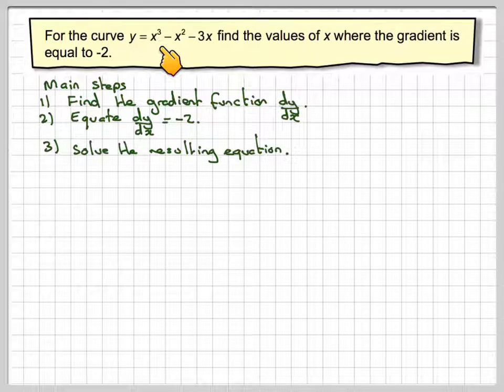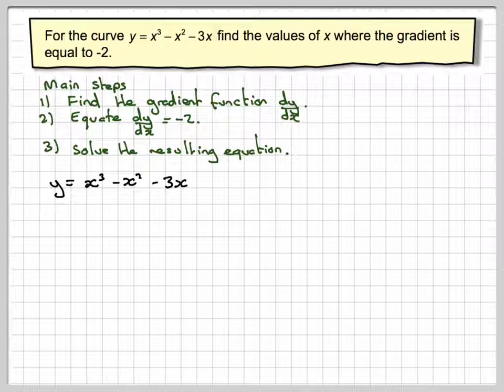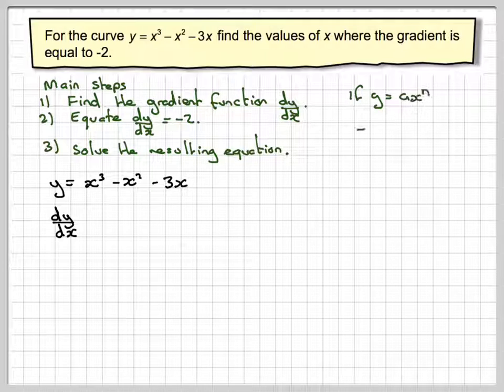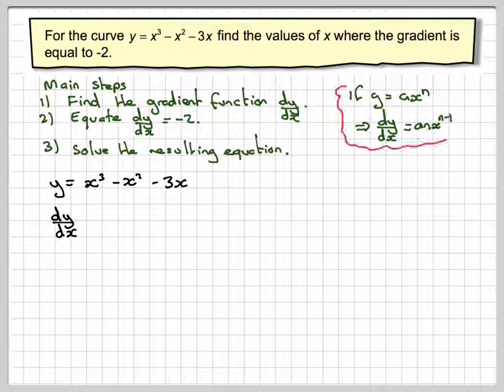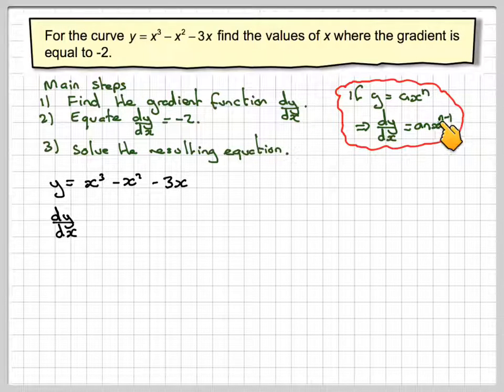So taking my function y is equal to x cubed minus x squared minus 3x and then differentiating it term by term. So dy by dx, if y is equal to ax to the n, dy by dx is bring the n down and then reduce the power, write down the x and then reduce the power by 1.